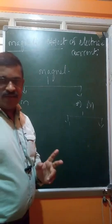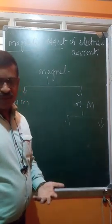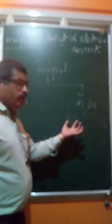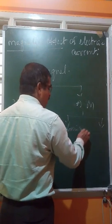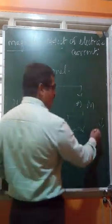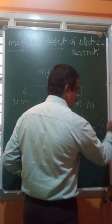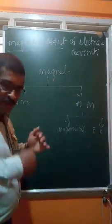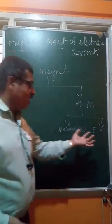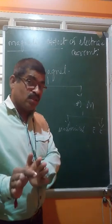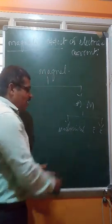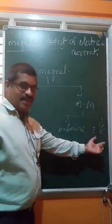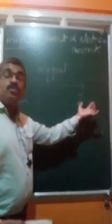Artificial magnets are prepared in the laboratory and can be given different shapes according to our convenience. There are two methods of preparation: one is mechanical, and another is by using electricity. Since electric energy produces magnetic energy, an electromagnet is one example. Both methods are used to produce artificial magnets.